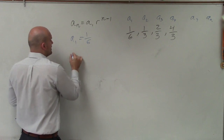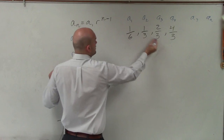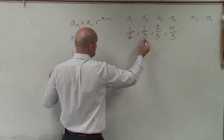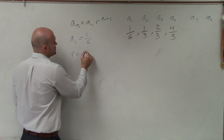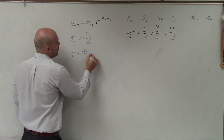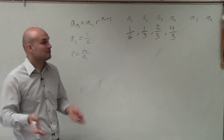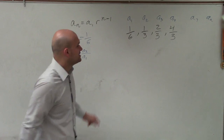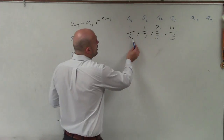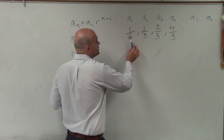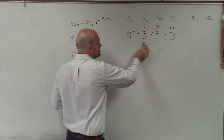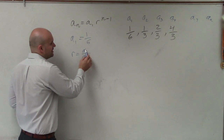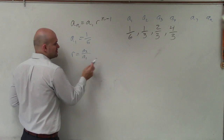And r is going to be the ratio between the term and its subsequent term. Most commonly, we use a sub 2 over a sub 1. However, you could do a sub 3 over a sub 2, or a sub 4 over a sub 3. But it's the ratio — the multiplier — of what you need to do to get from your previous term to the next term. So to find that multiplier, we divide a term by its previous term.